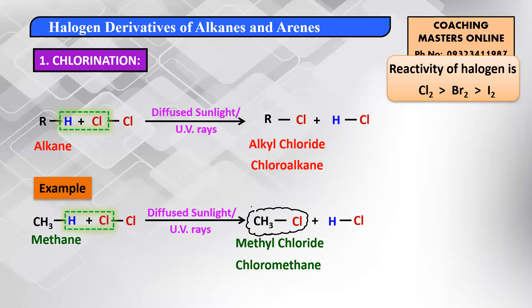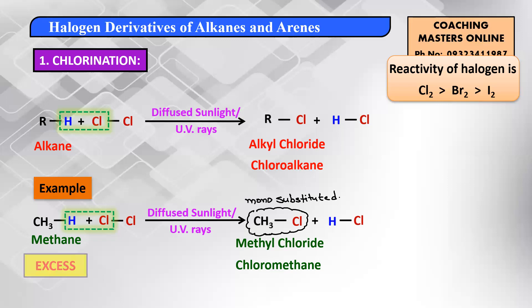The methyl chloride product we obtained is a mono-substituted species — only one hydrogen has been substituted. If you want a mono-substituted product, you need to remember that the alkane must be taken in excess. If you take alkane in excess and add halogen, you will get mono-substituted products.